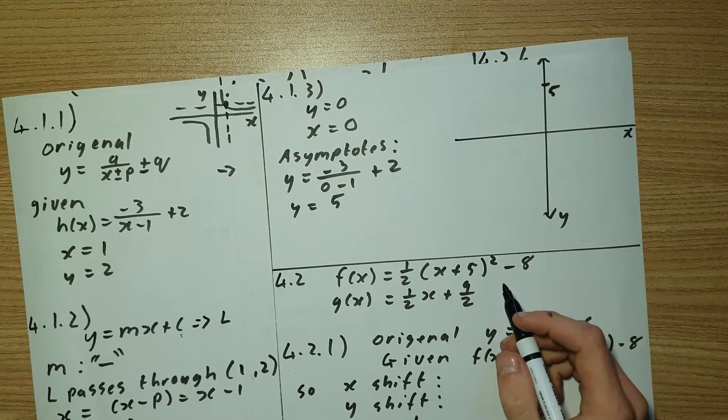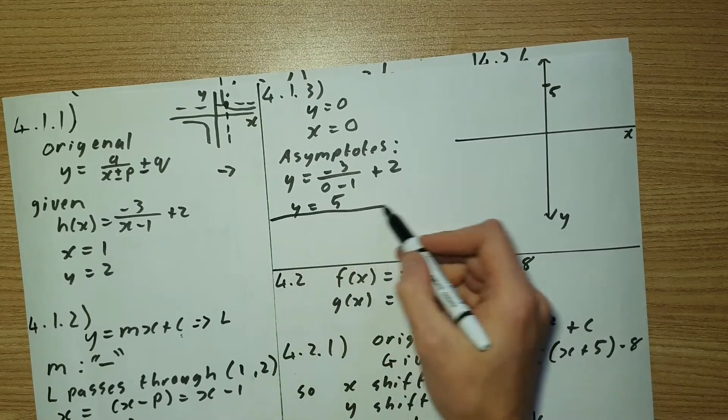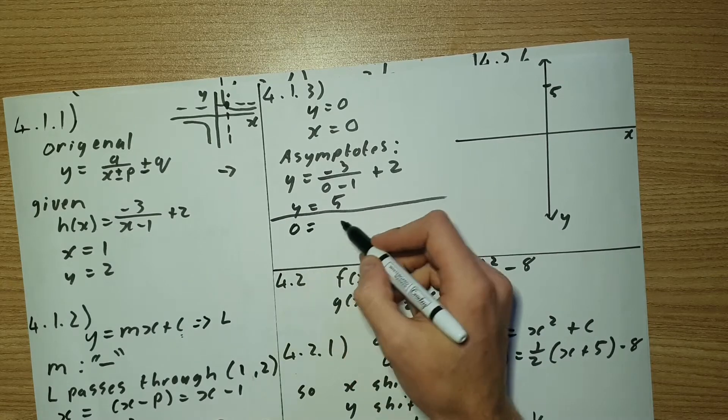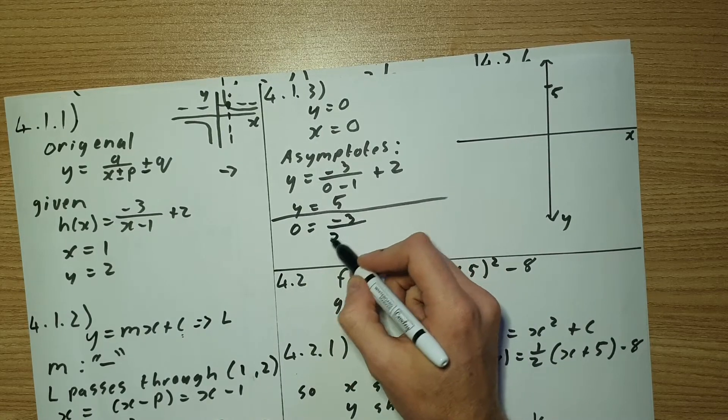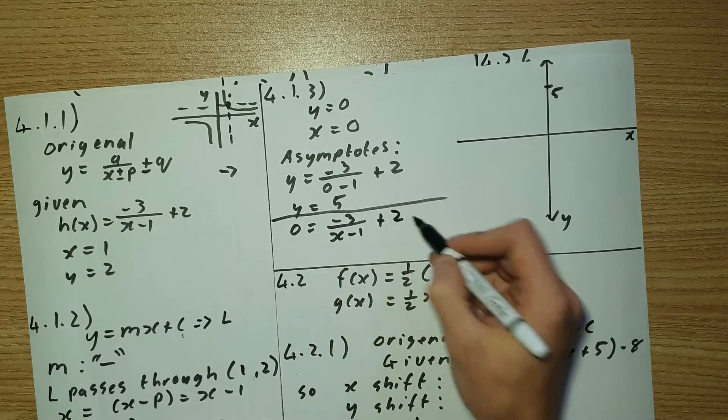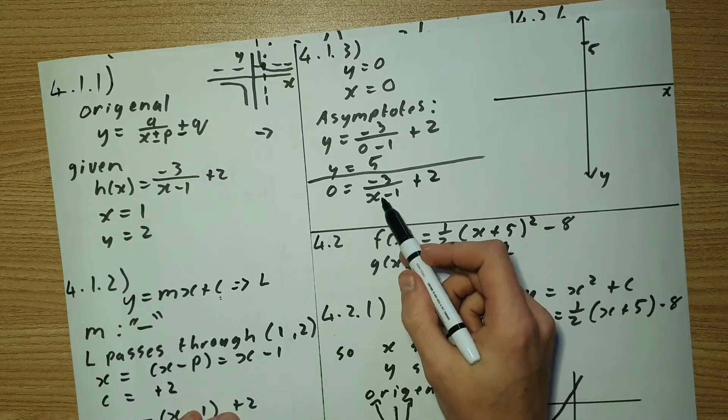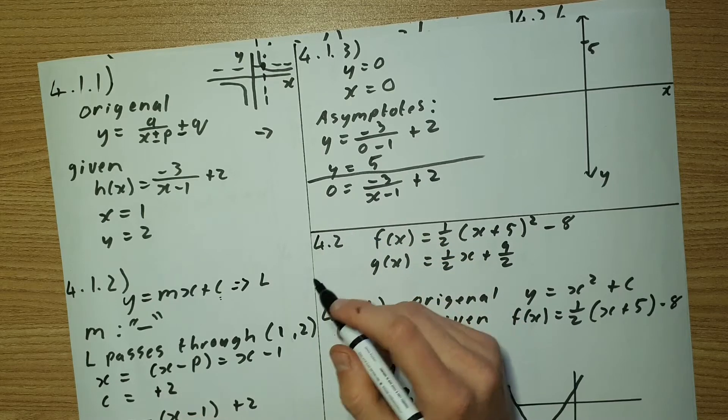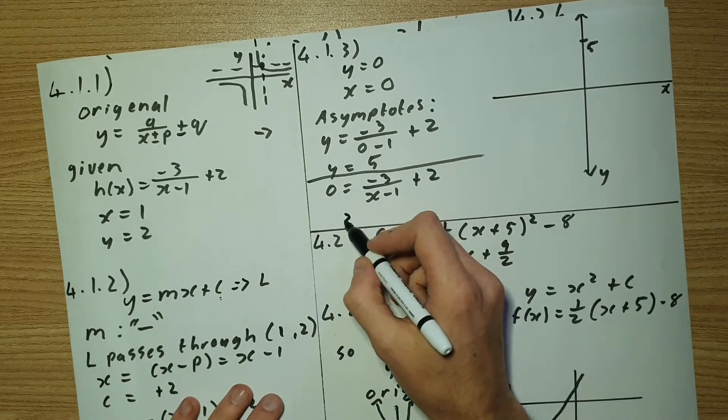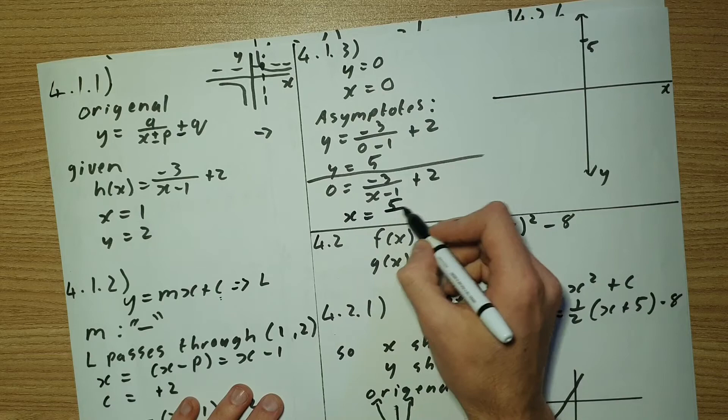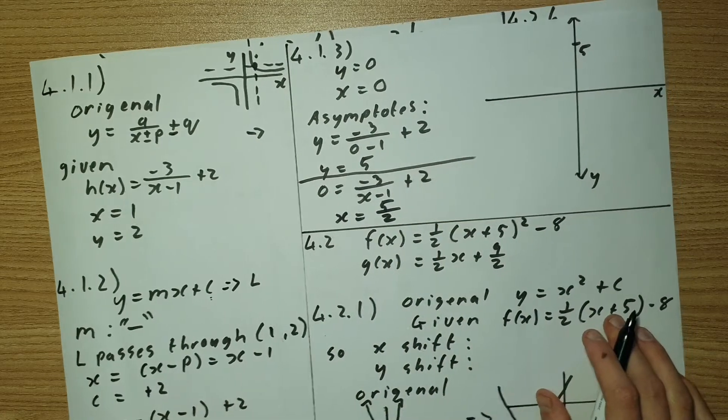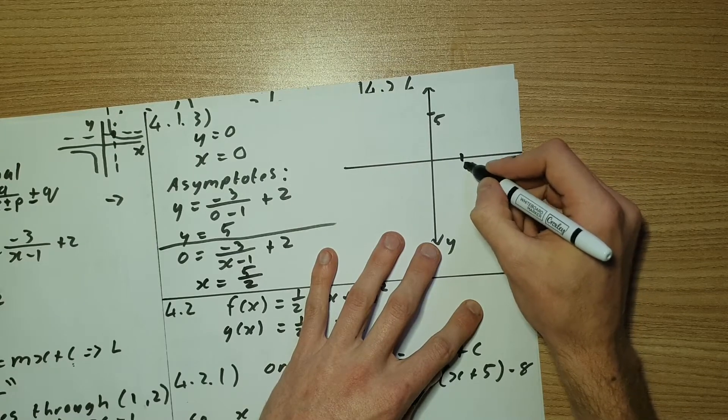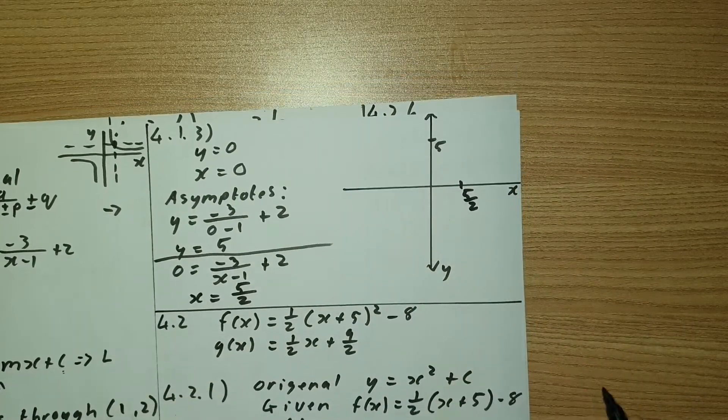Now if you let y equal to 0, then we can solve for x. So 0 equals to negative 3 over x minus 1 plus 2. Take the 2 over, multiply the x minus 1 across, and you can sort out the algebra, and you'll get down to x equals to 5 over 2. So that's going to be, let's say, over here. So 5 over 2.